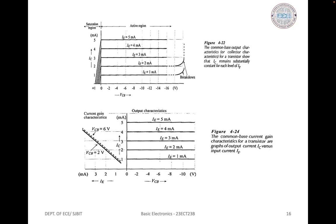The common base output characteristics show that for each fixed level of IE, IC is almost equal to IE, and IC appears to remain constant as VCB increases. In fact there is a very small increase in IC with increasing VCB, because the increase in collector-to-base bias voltage expands the collector-base depletion region, shortening the distance between the two depletion regions. With IE held constant, the increase in IC is noticeable only for large variations in VCB. This slope on the output characteristics is sometimes referred to as the early effect.